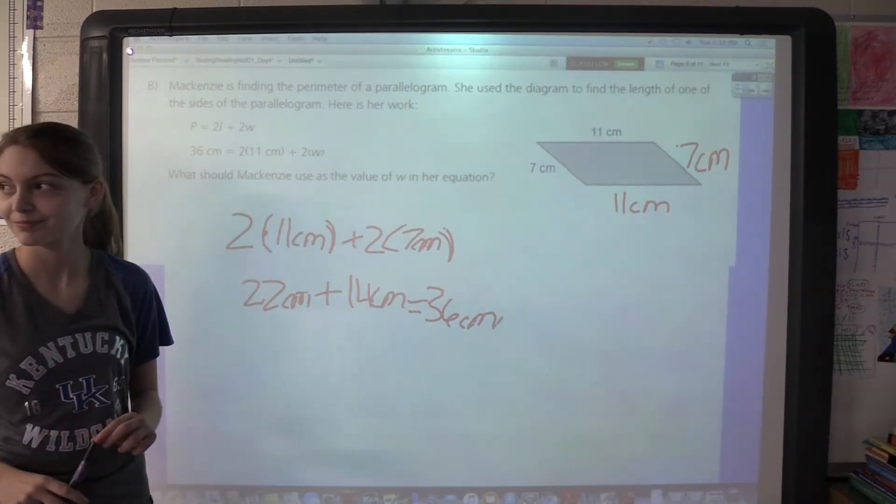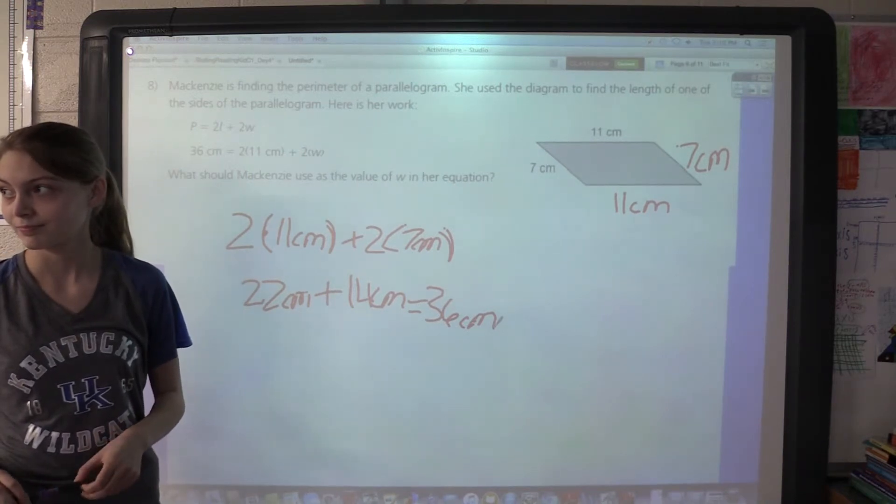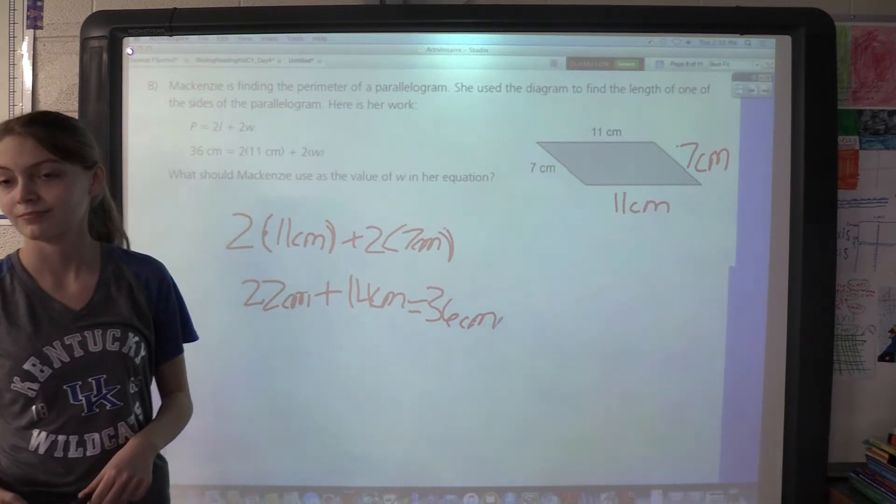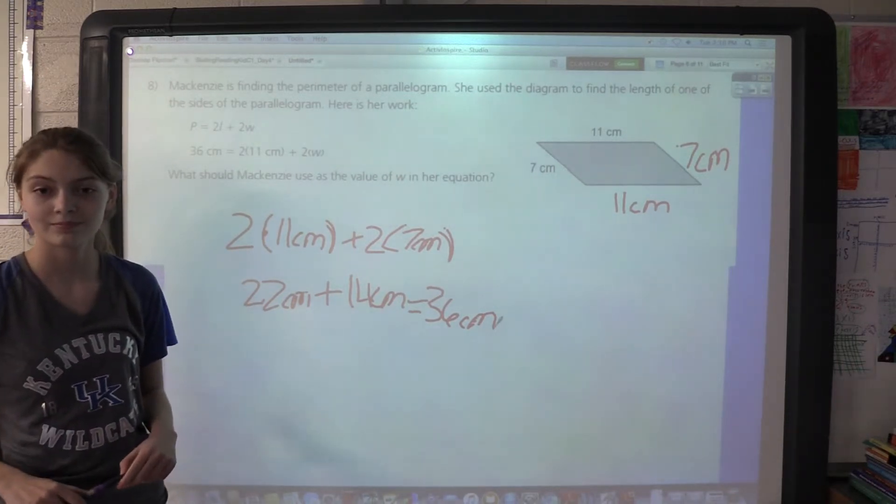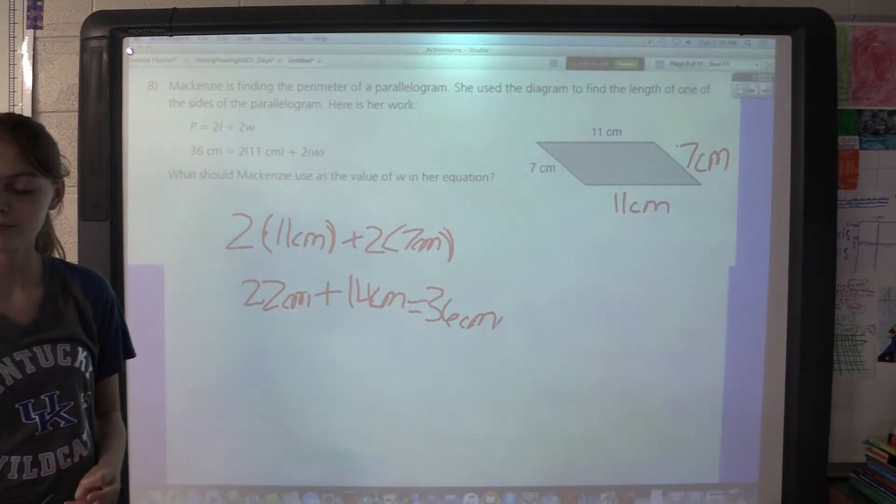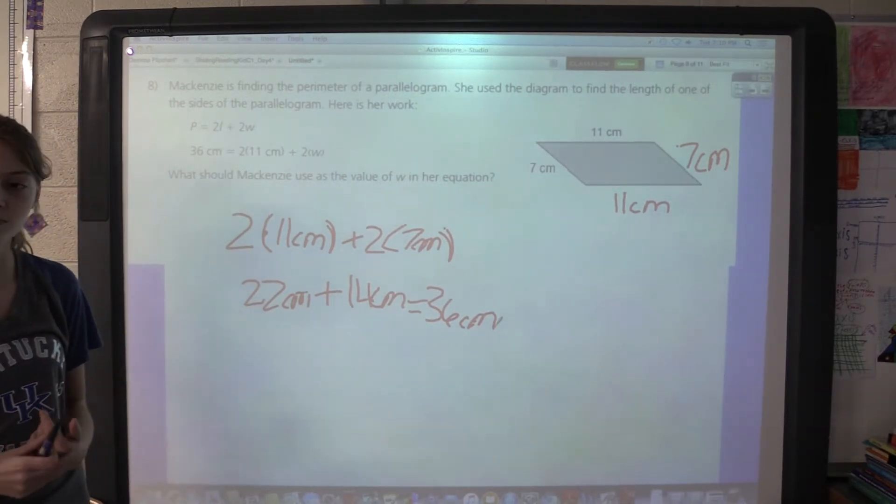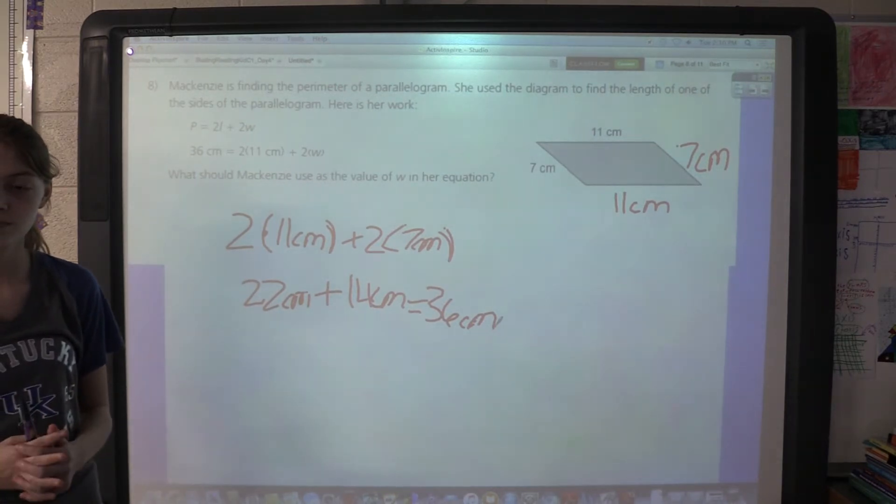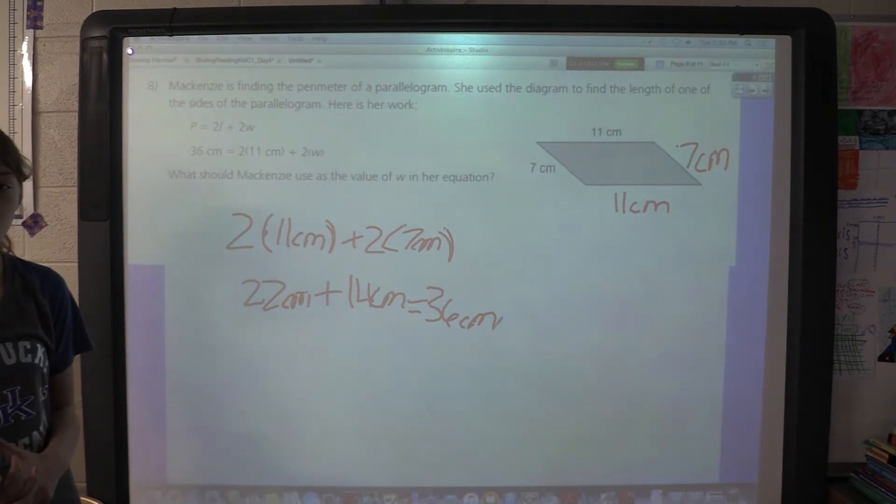One thing I wish you had done, since you know so much about parallelograms, is dazzled us by saying that because parallelograms have opposite sides that are parallel to one another, opposite sides are congruent—they are the same. That's why if one side is 7 centimeters, the opposite will be 7 centimeters. And if one side is 11 centimeters, the other side will be 11 centimeters. You did a very good job.